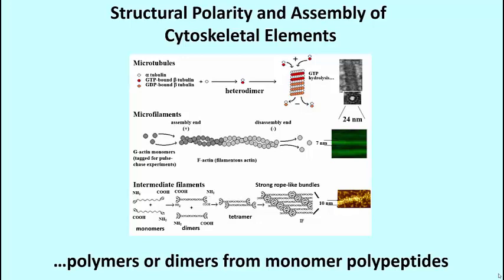A common example is keratin, the major protein of hair and fingernails found outside cells. Keratin inside cells forms a part of the cytoskeleton.